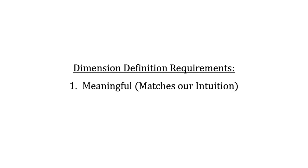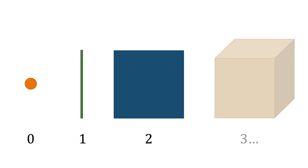That is to say, it should match our intuition of how we normally think of dimension. So a point should be zero dimensions, a line one, a square two, and a cube three.